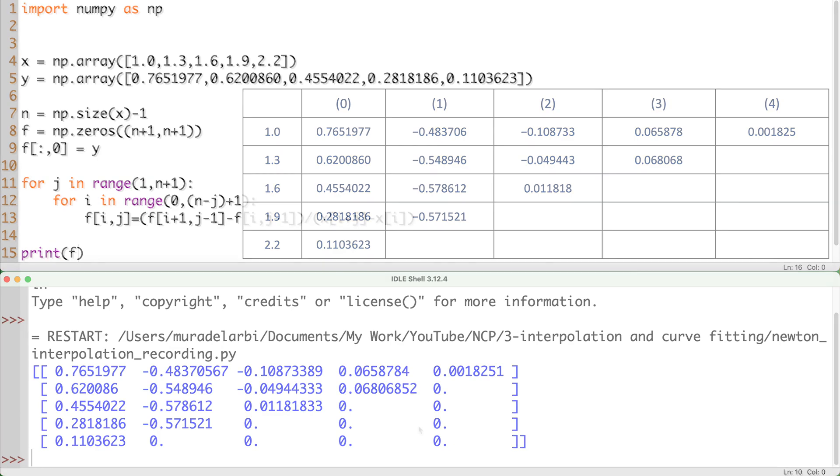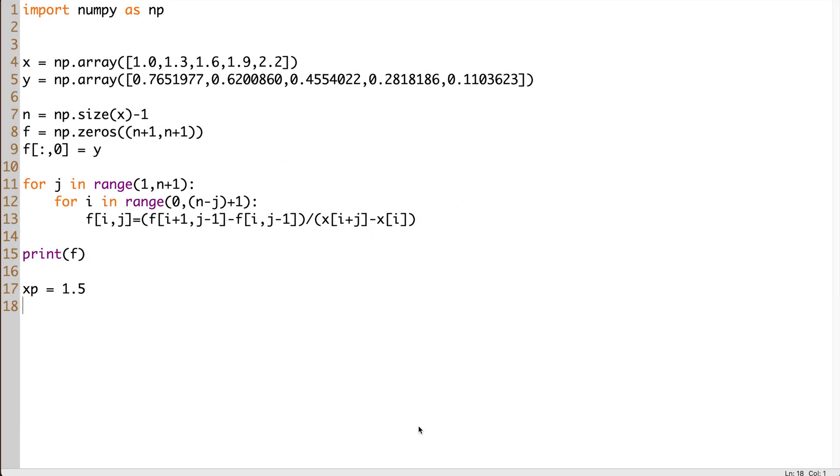The next step is to substitute the coefficients and the given x value, xp, in the polynomial. Let's use the coefficients of the constant term as an initial value. Then we start the outer loop of summation. Since we calculate products at each term, we need to initialize the product variables xp with the multiplicative identity value 1. The second loop calculates the product. Note that 0 is the default start value for range. After product calculation, we move back to the outer loop of summation and write the summation line. Finally, let's make a formatted print for the final result.